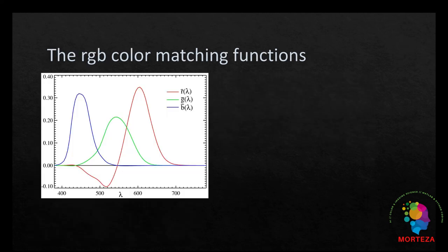These color matching functions, tristimulus values of the spectrum colors, they are also called tristimulus values of the spectrum colors. So, these color matching functions show the amount of the primaries needed to match the specific spectrum color at a specific wavelength.